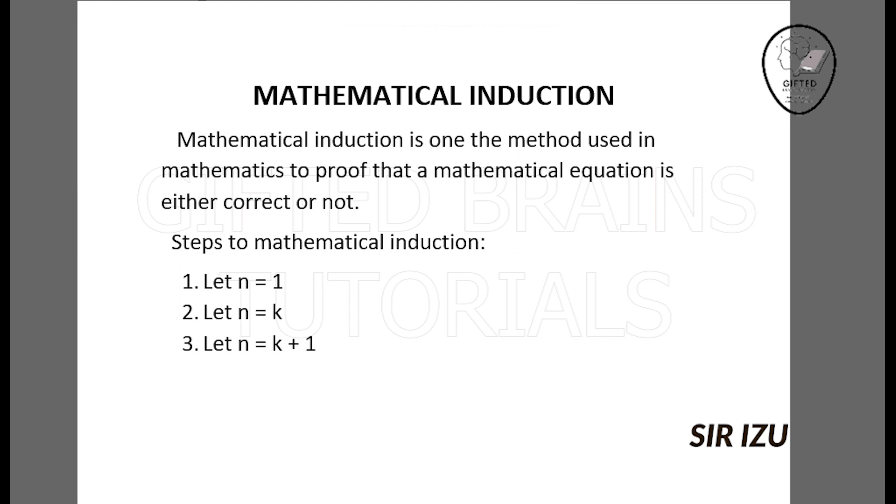If step 1 works, you move to step 2, which is let n equal k. After which you move to step 3, let n equal k plus 1. In step 3, you must work the left-hand side to show it equals the right-hand side. Then you say it has been proved. We will take examples to illustrate this.